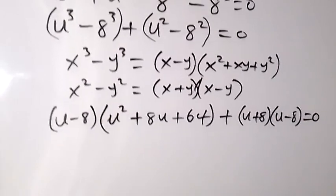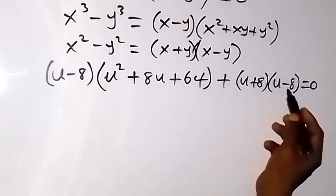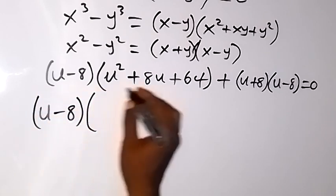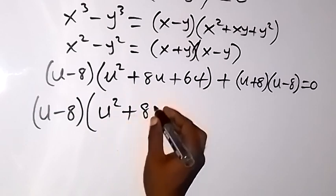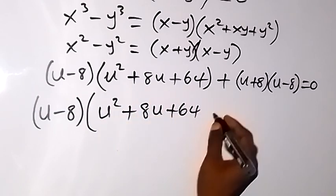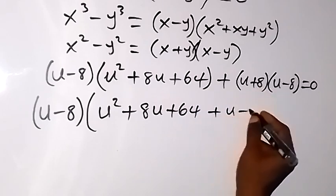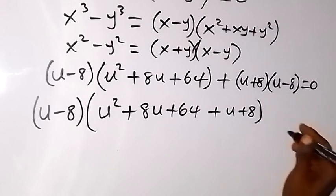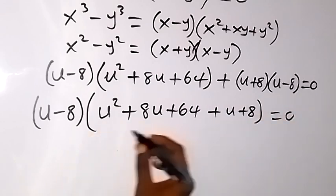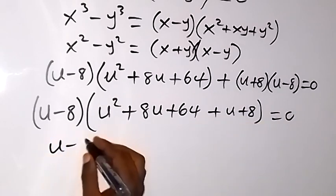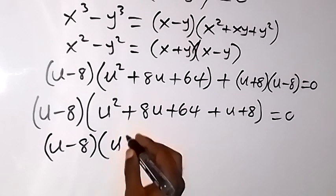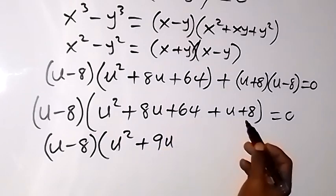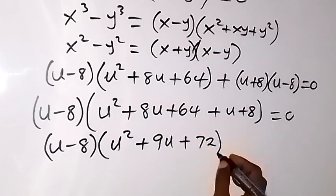From here we can factor out the common factor (u minus 8). When we factor it out, we have u minus 8 multiplied by what remains: u squared plus 8u plus 64, plus u plus 8. Combining like terms inside the bracket gives us (u minus 8)(u squared plus 9u plus 72) equals 0.